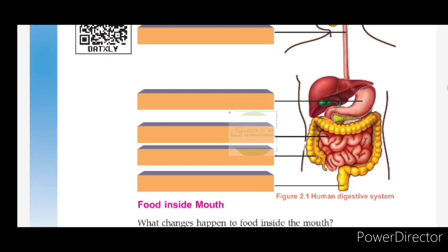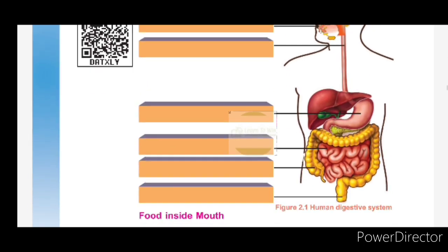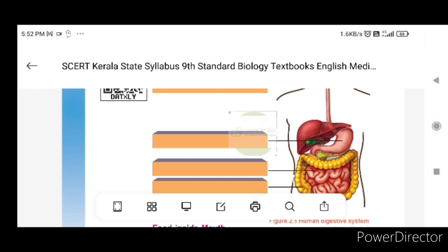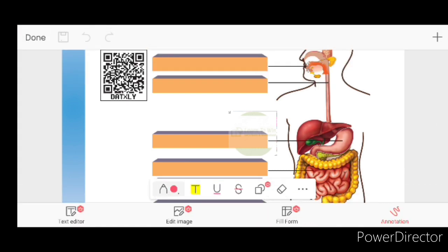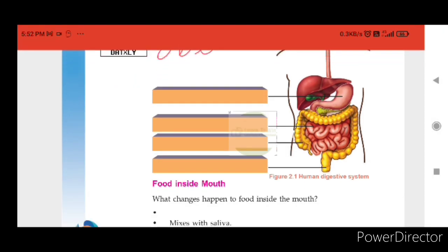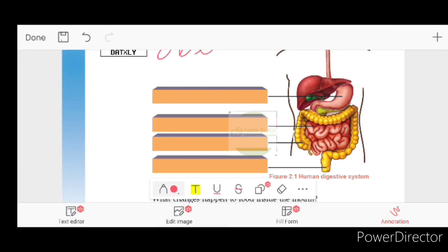The next topic is the Human Digestive System. The first part is the mouth. Next is the esophagus. Then the liver.